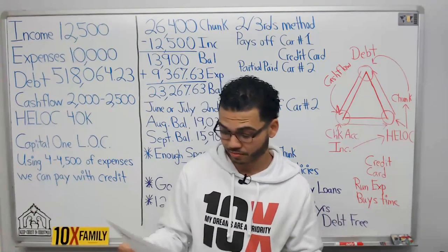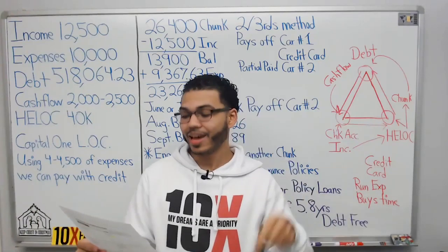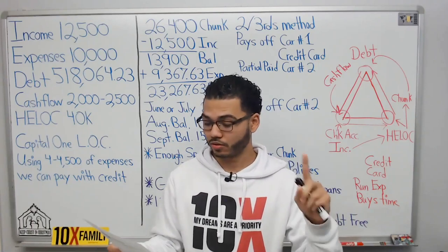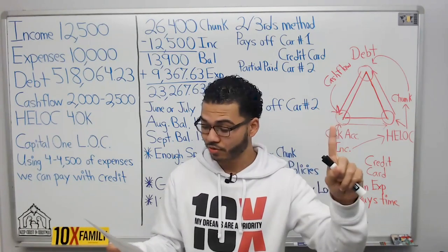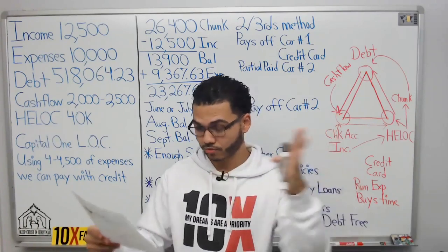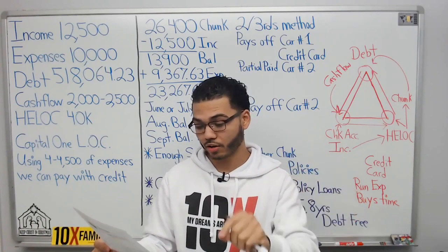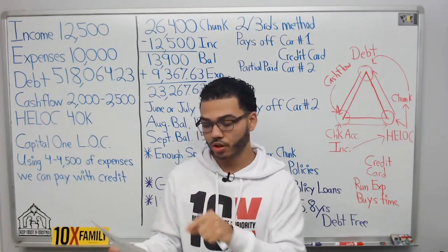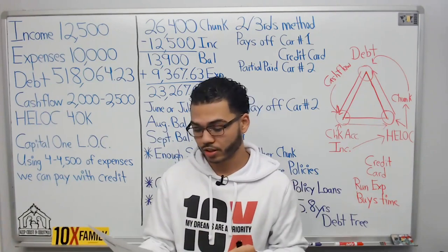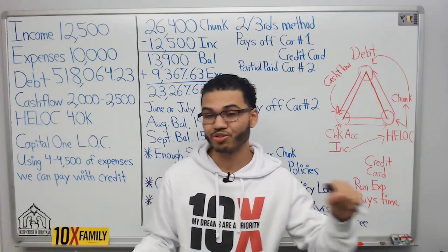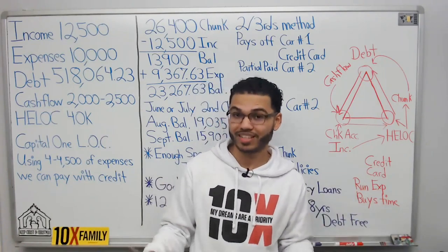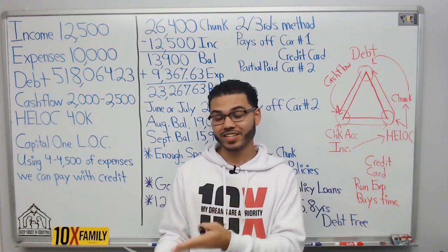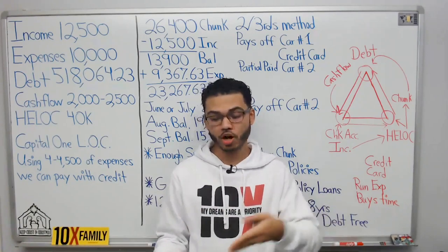It says 2.99%. It says 'temporary fixed initial daily periodic rate.' So 'temporary' means not forever, 'fixed' means consistent for a temporary period of time, and 'daily periodic rate' is the daily interest rate — that's what we're concerned about. That's what's going to determine our costs when we're doing velocity banking. It says 0.008%. That's peanuts. So this gentleman has a six-month intro rate of 2.99% on his HELOC.